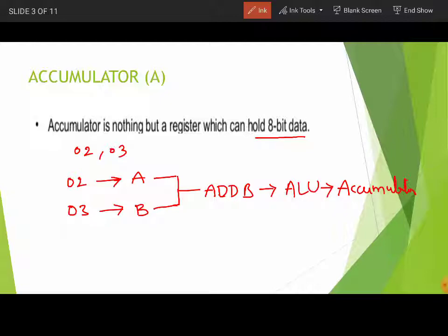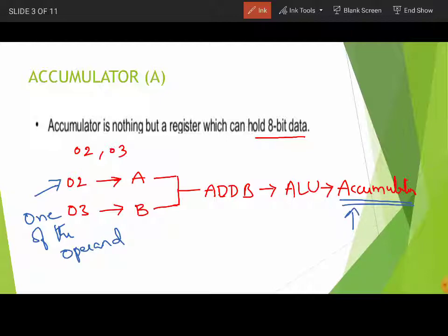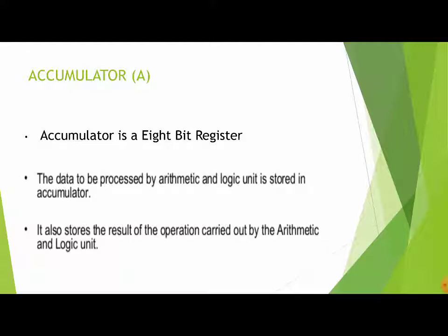So to summarize: the accumulator is an 8-bit register. It holds one of the operands — operand means data — during any arithmetic or logical operation. It also stores the result collected by the ALU. The final result is placed in the accumulator, which is why it is called the accumulator register. It is a very important register.